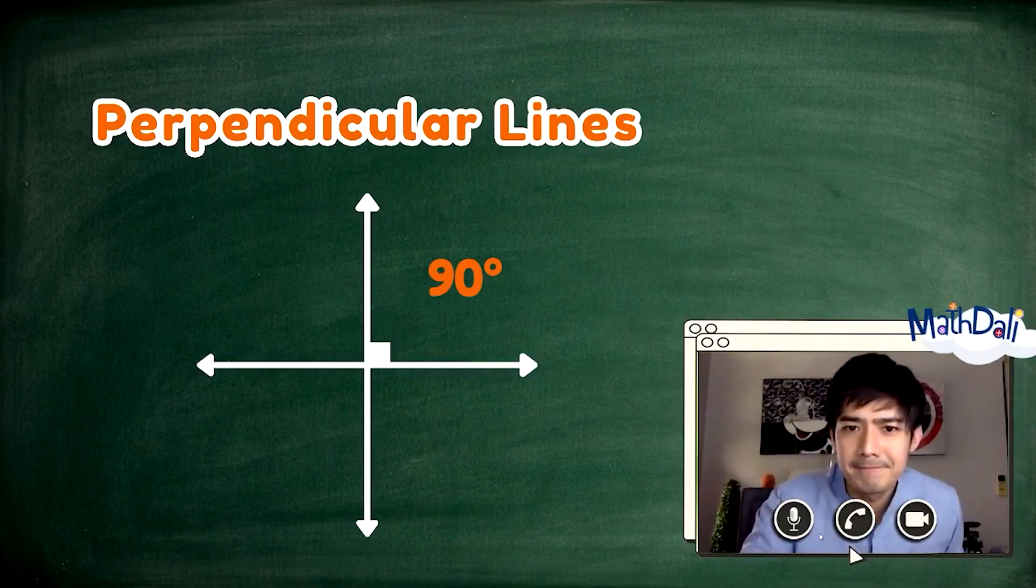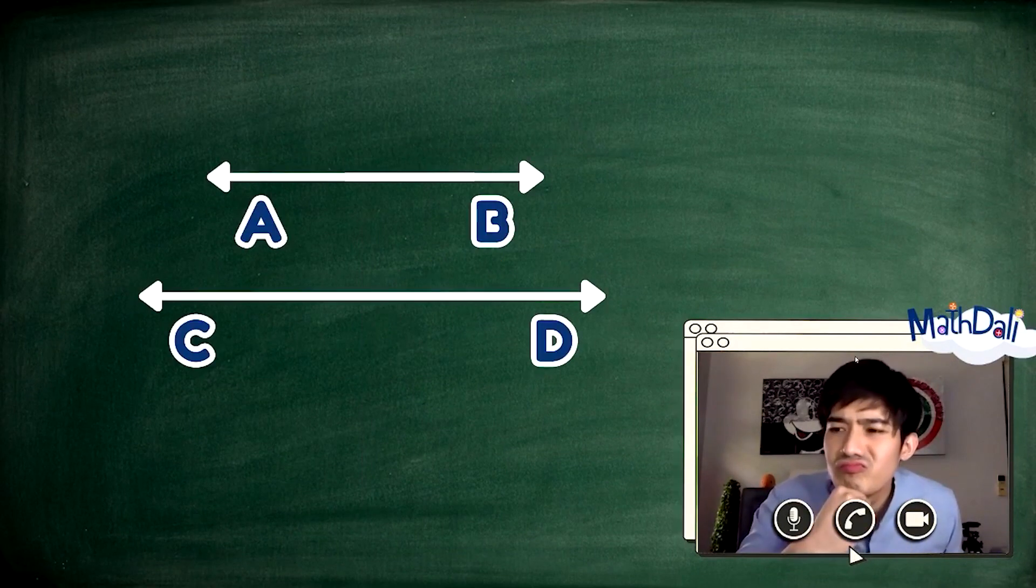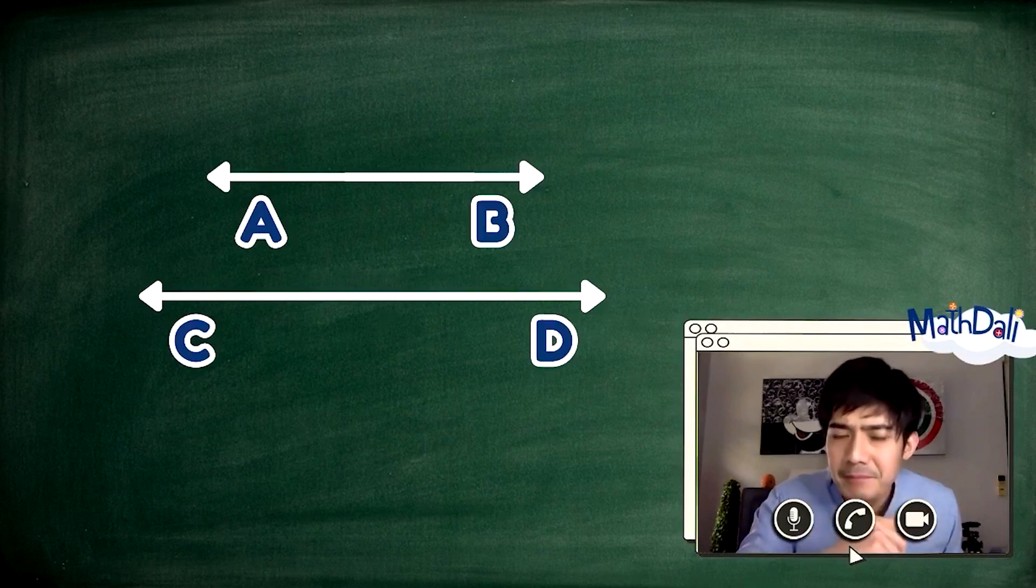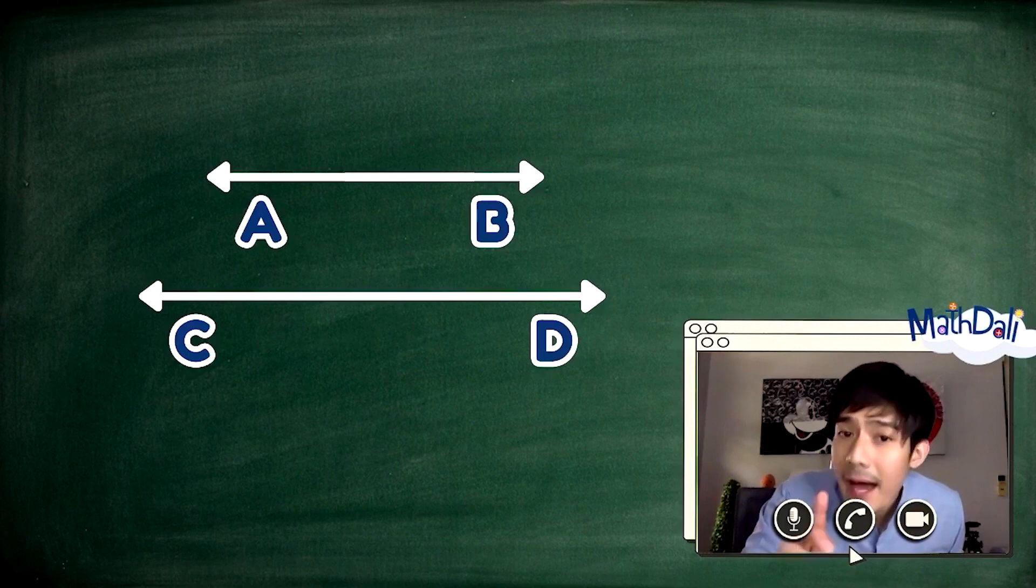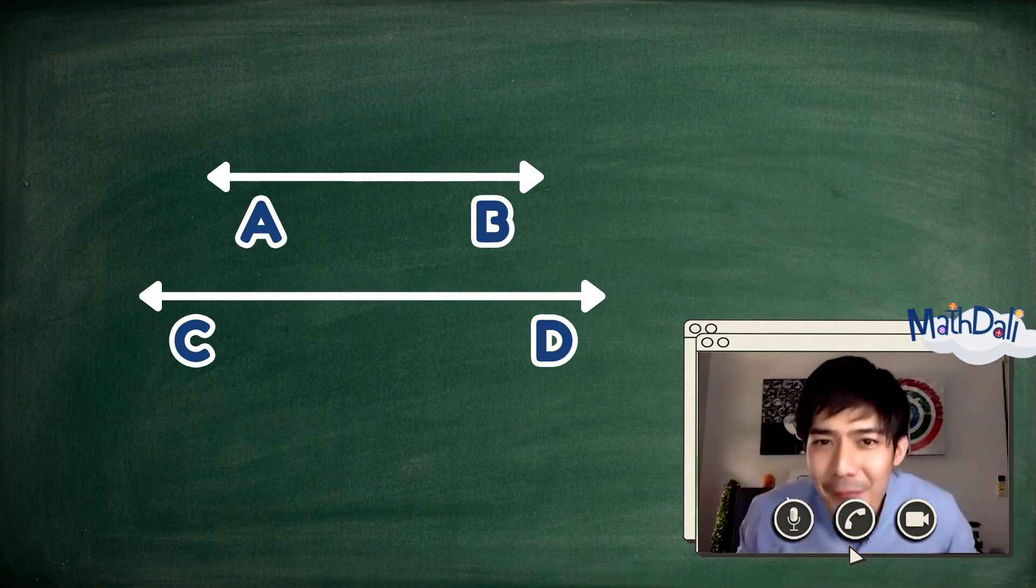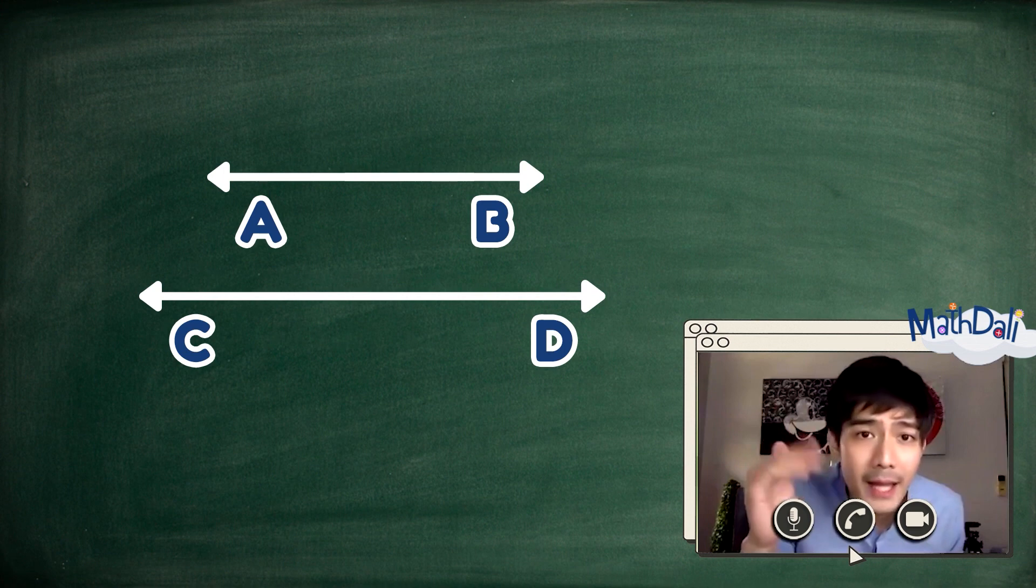Sige nga. Magpractice tayo guys. Anong klaseng linya ang mga ito? Ano nga? Tama. Parallel lines. Ang line AB ay paralel sa line CD. Dahil hindi sila magtatagpo kahit na humaba at umikli pa ang mga lines na ito. Anong simbolo ang ginagamit para sa parallel lines? Sige nga. Paano naging isusulat na yung dalawang lines na yan ay paralel? Naalala nyo pa ba?